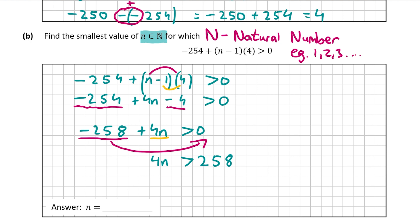So now to work out the value for n, I'm going to divide both sides by 4. Whenever you're left with a number before the variable, just divide both sides by that number. So 4n divided by 4 gives us n, and 258 divided by 4 is equal to 64.5. So we find that n is greater than 64.5. However, remember that n must be a natural number, so we round to the nearest natural number. The nearest natural number to 64.5 is 65. Therefore the answer is n equal to 65, and that question is worth 10 marks.